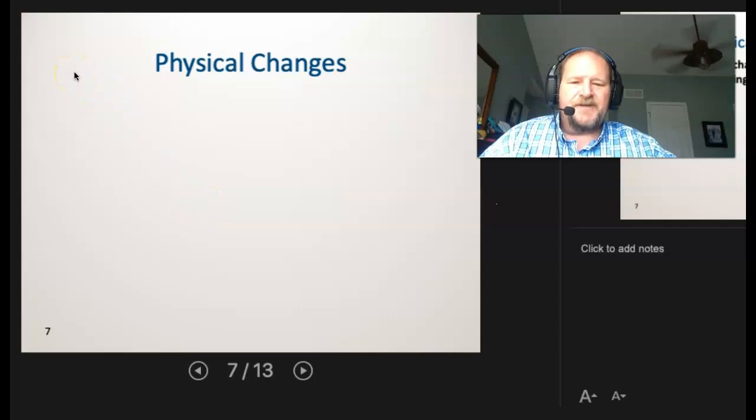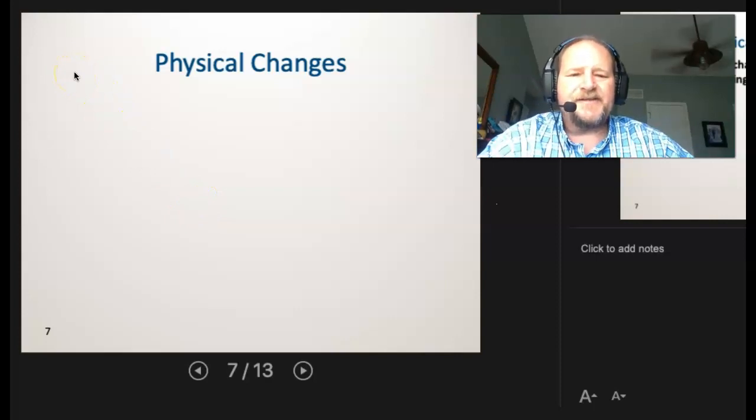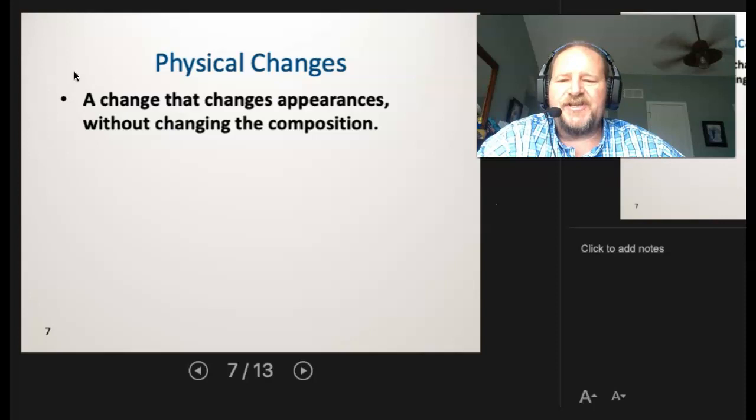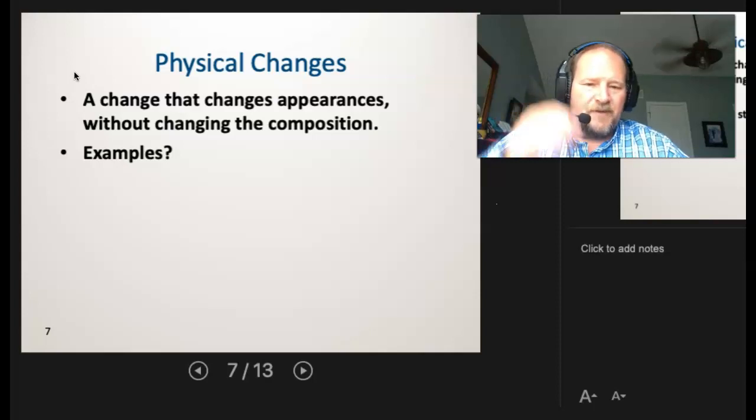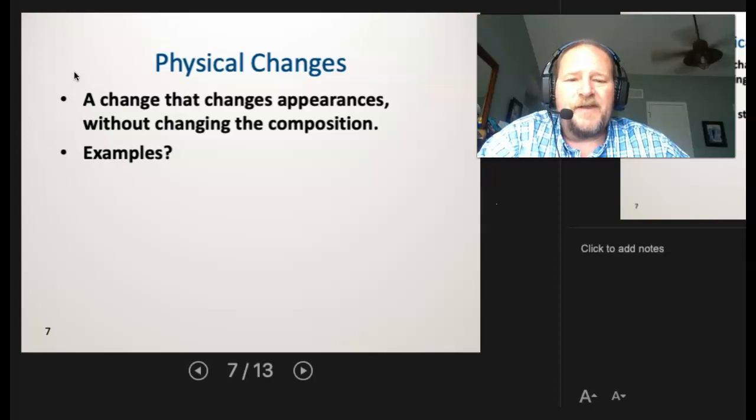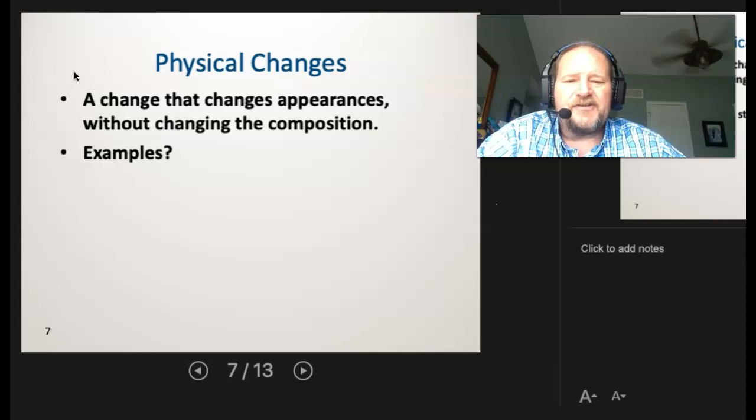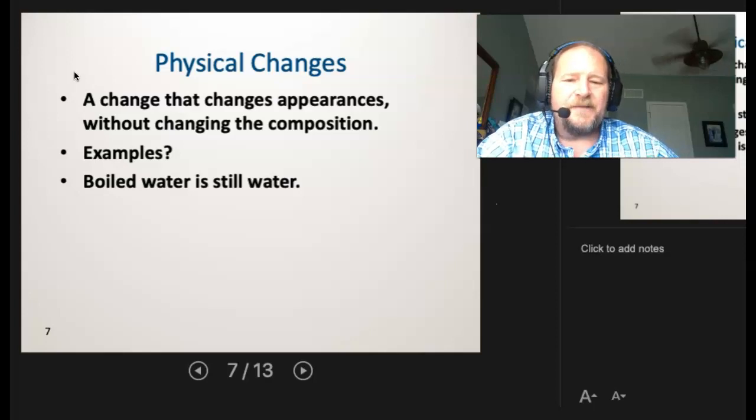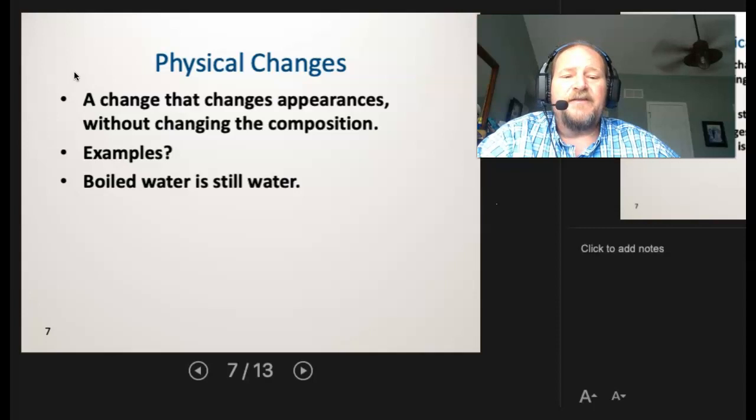So physical changes then. So we talked about physical properties. We talked about chemical properties. Now we want to look at physical changes. So a change that changes the appearances without changing the composition. So can you think of an example of that? So some typical examples. One of the classics would be chopping wood. So if I were to go out the backyard here, we have a fireplace and I have to cut wood every once in a while. So if I were to go downstairs and chop wood, that would be a physical change. Some others, boiled water is still water. So if I go from solid ice to liquid water, all the way up to a water vapor, so humidity, that's still water all the way across the board. So those are all physical changes.